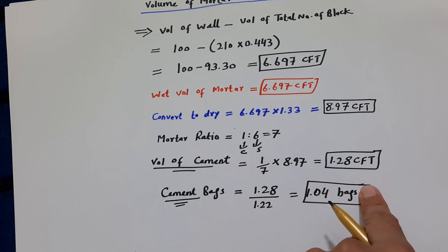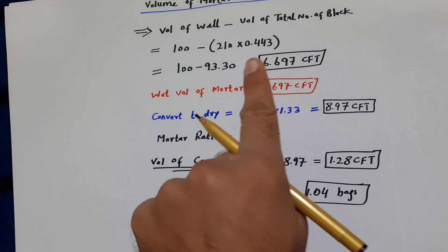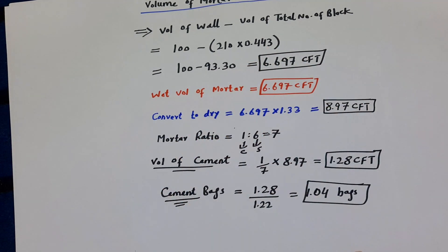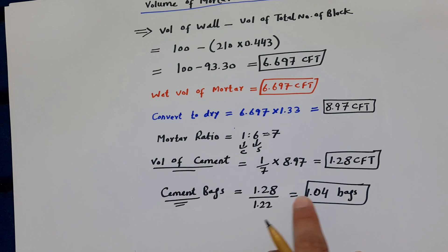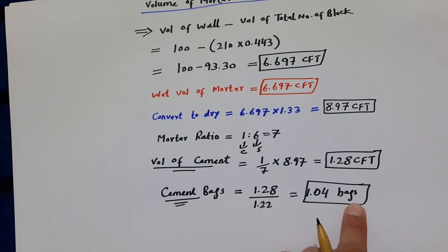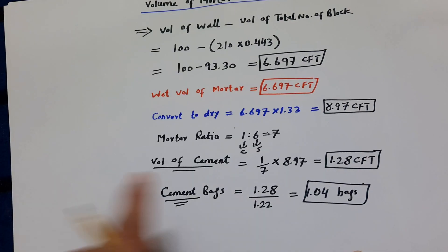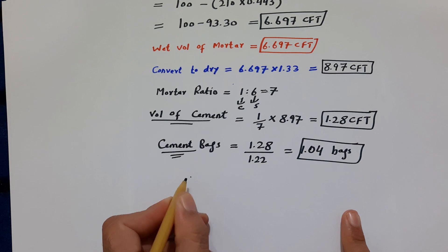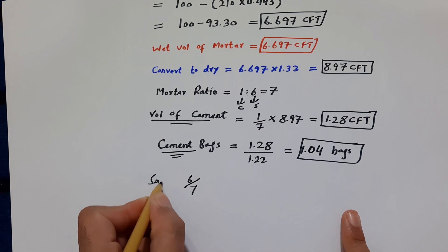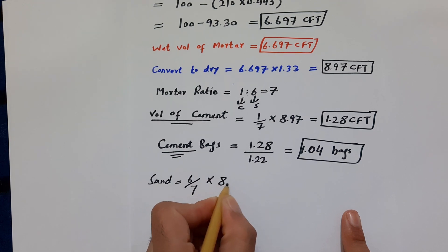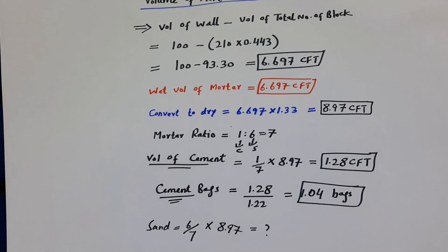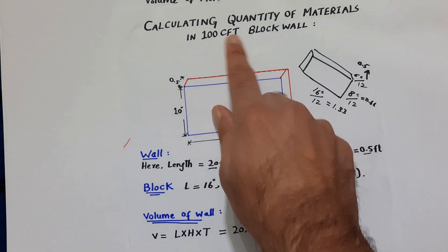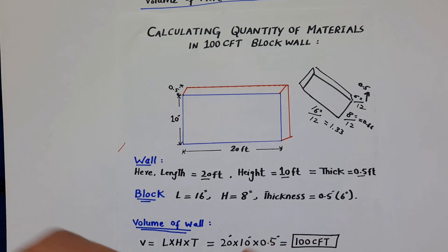Now I need to find how many cement bags are required to complete this 20 × 10 × 0.5 feet wall. The number of cement bags = volume of cement ÷ volume per bag = 1.28 ÷ 1.22 ≈ 1.04 cement bags. For the volume of sand, use (6 ÷ 7) × 8.97 to get the sand volume. This short video explained how to calculate the quantity of materials in a 100 cft block wall. Thanks for watching — see you in the next video, goodbye.